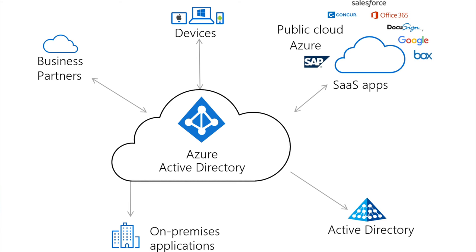They need to work very closely with their cloud engineers and cloud techs because it's going to be directly related. For example, you've got Azure AD in the cloud and a domain controller sitting in your data center on a server running AD as well — you need them both to talk to each other. You want to make sure your network is set up so that the on-prem and the cloud work together.